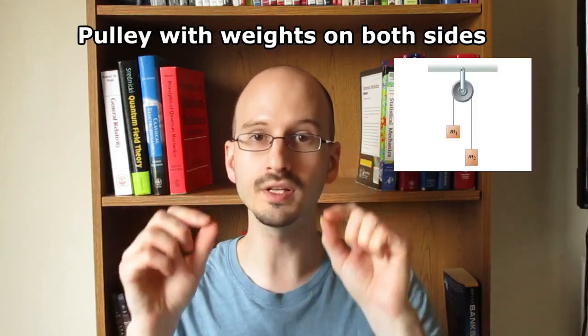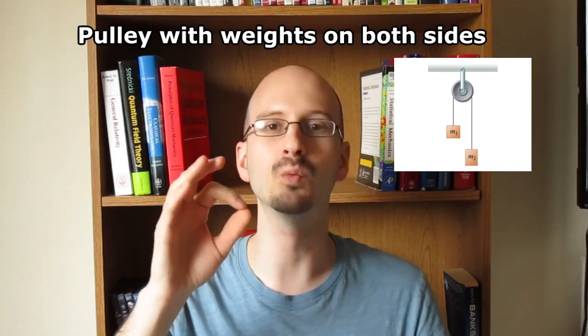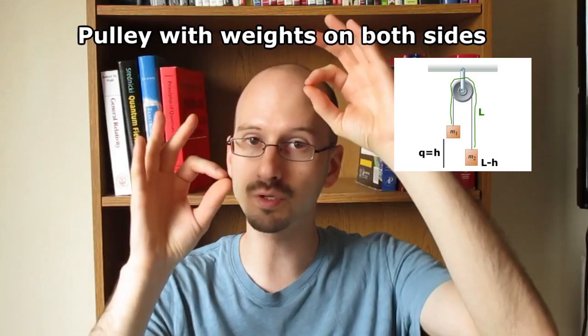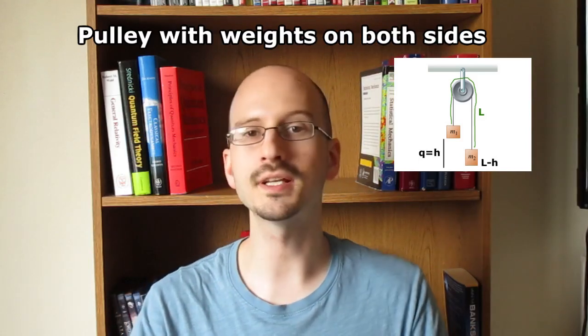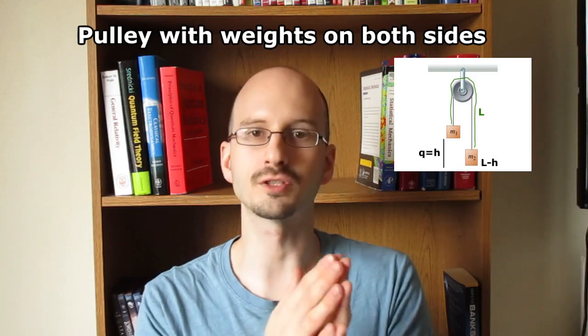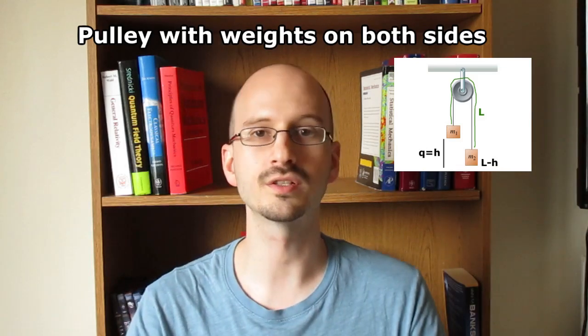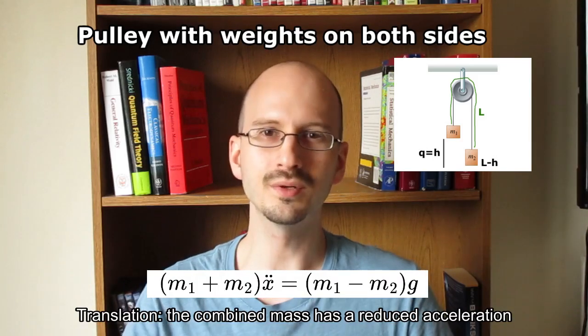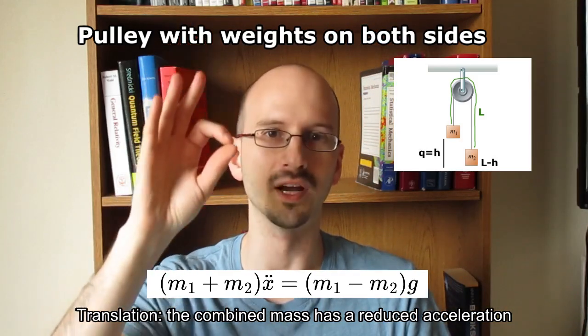Example three is a pulley with weights on both sides. There's only one generalized coordinate here. It is the height of one weight. That's the only coordinate we need because the other weight is connected to it. If the first one moves, the second one also moves. That's the constraint. The potential energy is gravitational. The kinetic energy is traditional kinetic energy. Both of them are described in terms of the height of the first block. When we do Lagrange's equations, we end up with an equation of motion that looks like this, which probably looks strange to you, but basically it's saying that the two weights accelerate slower than they would if it was just one weight falling.